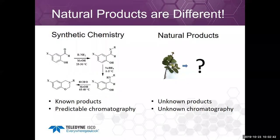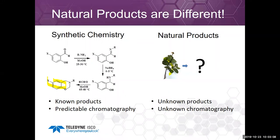The first thing to remember is that natural products are different. In synthetic chemistry, you already know what compound you have — you've synthesized it. In natural products, you're starting with just a leaf, a fungus, a bacterial extract, or some other source. We know there's some activity in there, but we don't know what it is. We have unknown products and therefore unknown chromatography. So I'm going to help suggest ways to make it easier to purify and identify the compound more quickly.